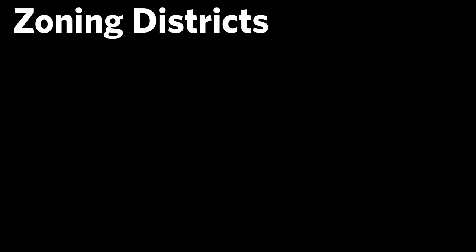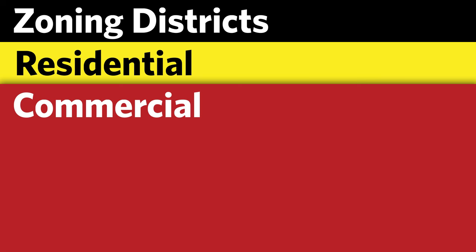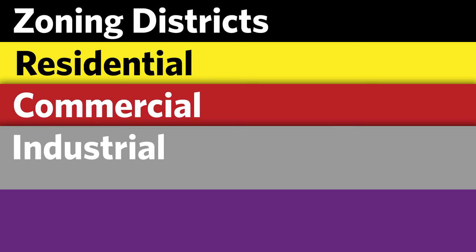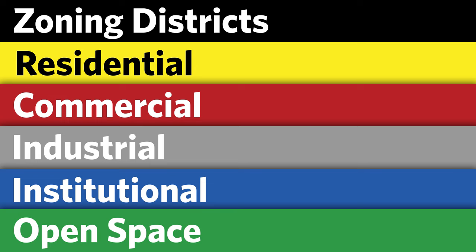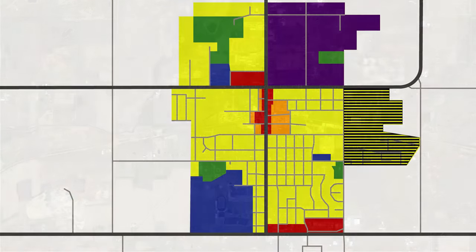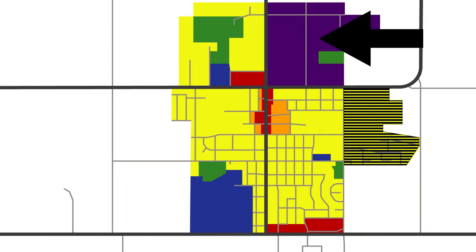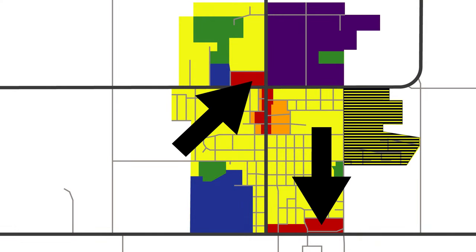The basic district types are: residential, from single-family homes to high-rise apartments, shown in yellow; commercial, including retail, restaurants, and hotels, colored red; industrial, in gray, though some maps show them in purple; institutional, which means schools and public buildings, typically in blue; and open space, in green. Here's an example of a zoning map — most of the city is residential in yellow, there's a large industrial section in the northeast, and a few areas of commercial in red.